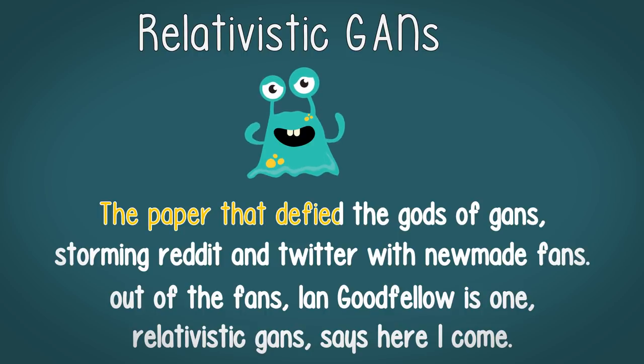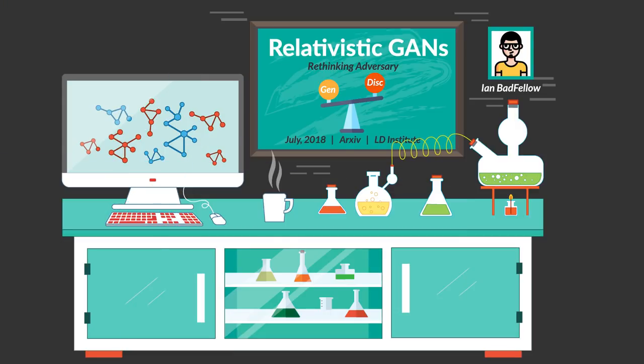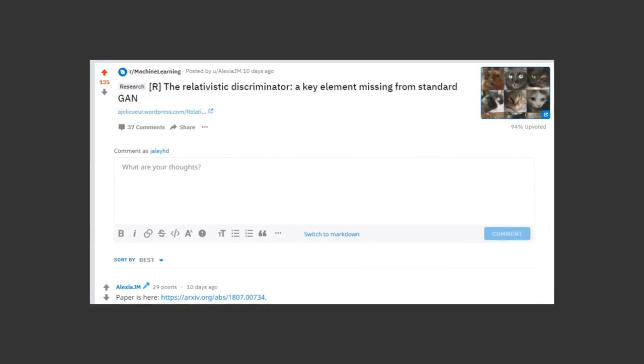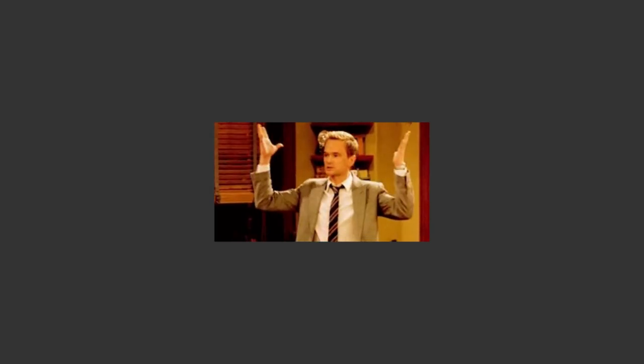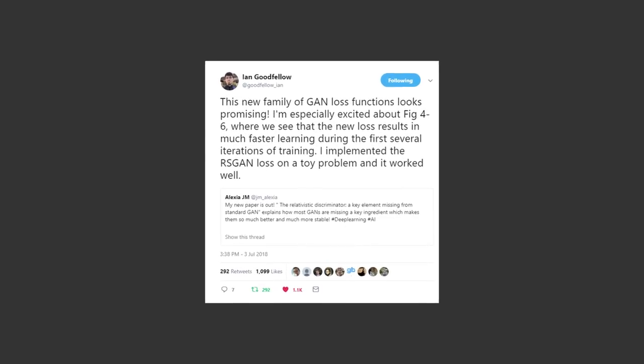The paper that defied the gods of GANs, storming Reddit and Twitter with new-made fans. Out of the fans, Ian Goodfellow is one who approved Relativistic GANs. Recently, I came across this post on Reddit ML Group about relativistic GANs. The idea not just blew my mind, but even Ian Goodfellow himself had to tweet in appreciation.